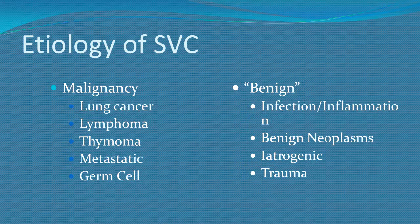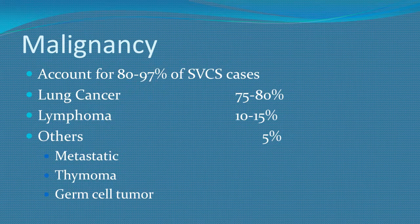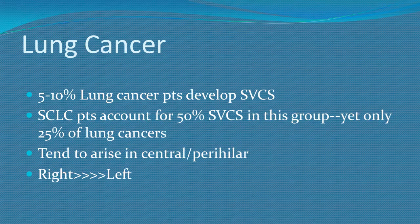Causes of obstruction include malignancy — lung cancer, lymphoma, thymoma, metastatic disease, germ cell tumor — benign infection, benign neoplasm, and iatrogenic trauma. Malignancy accounts for 82-97% of cases. Lung cancer, lymphoma, metastatic disease, thymoma, and germ cell tumors are the main malignant causes. 5-10% of patients with lung cancer develop SVC obstruction, and small cell lung cancer accounts for 50% of SVC obstruction cases. These tend to arise centrally or perihilar, more commonly on the right side.